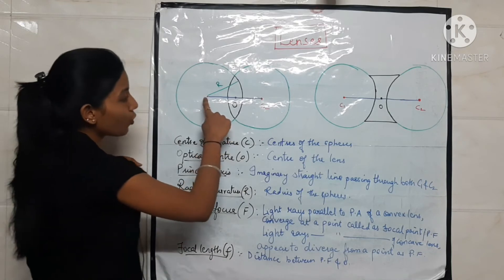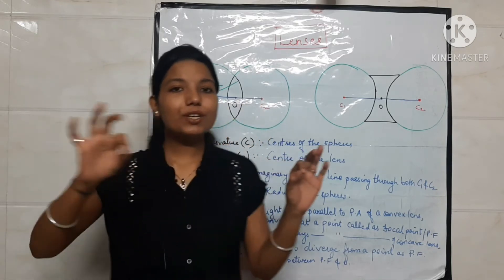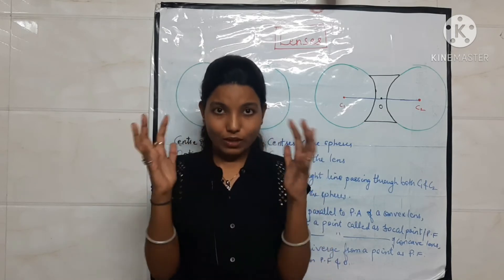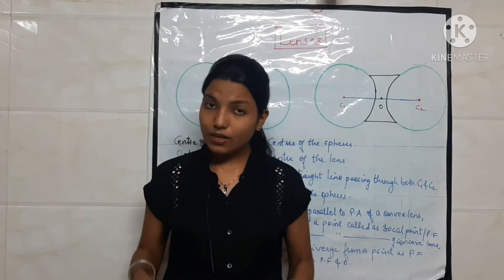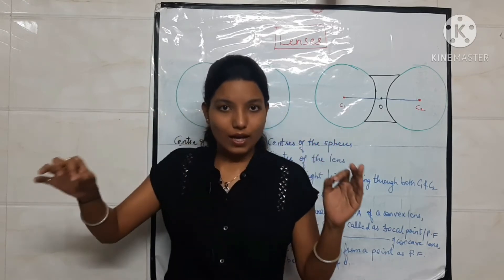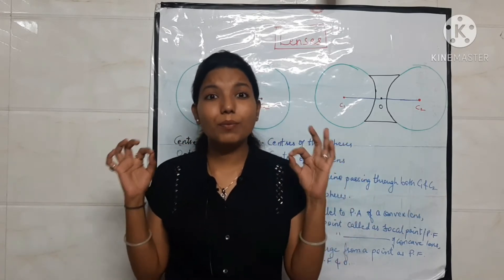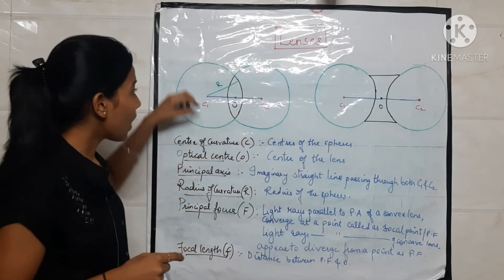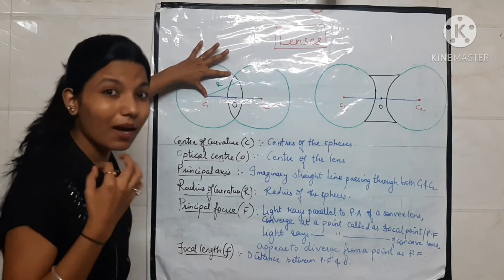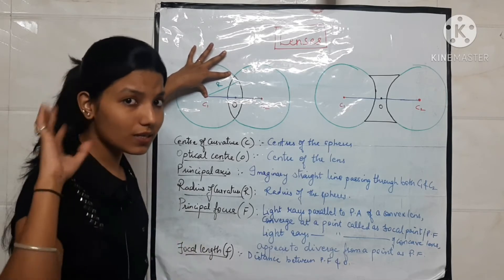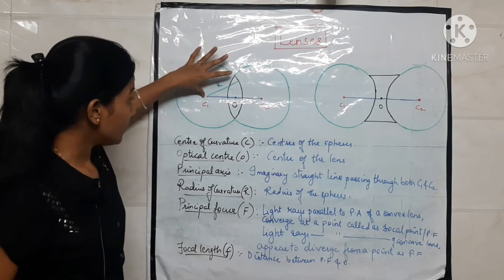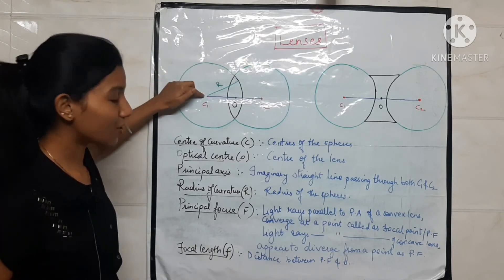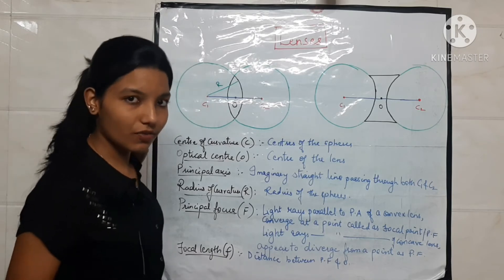Now, a line joins these two centers of curvature and the optical center — an imaginary straight line passing through C1, C2, and the optical center. That line is called the principal axis. Also, the radius of the sphere — from the center of curvature to the surface of the lens — is called the radius of curvature. So radius of curvature is from the center of curvature; the radius of the sphere is the radius of curvature.